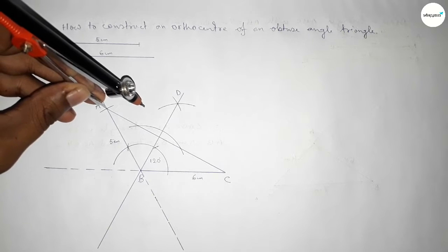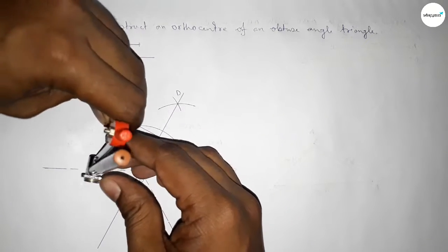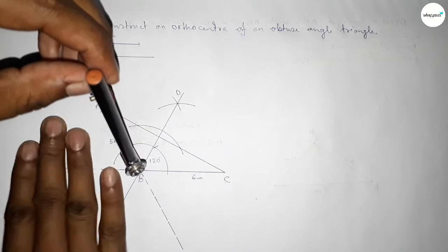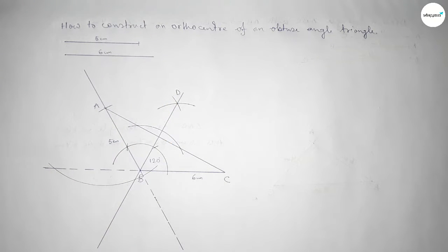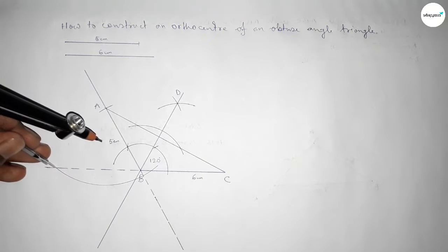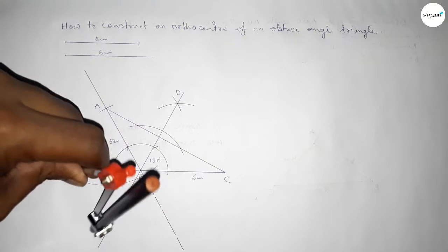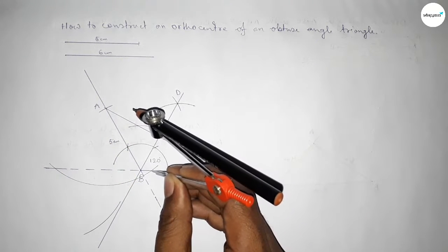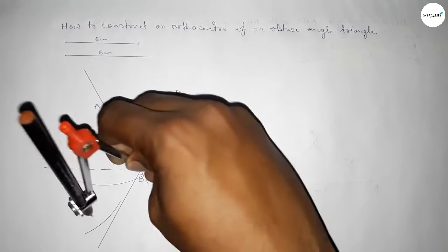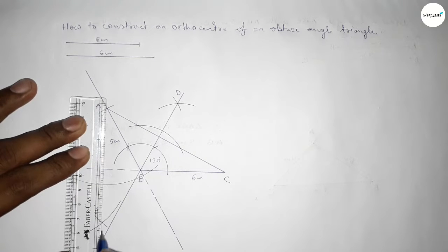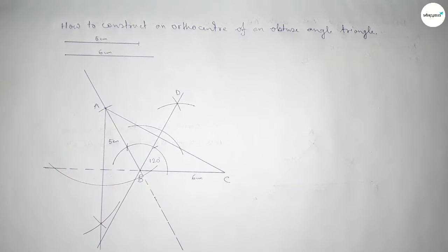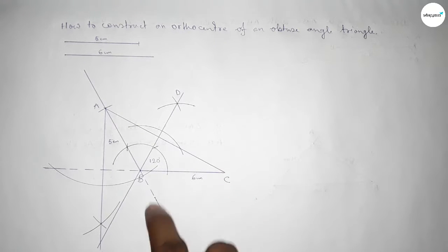Next, drawing a perpendicular line from point A to line BC. Putting the compass on point A and taking any length, drawing an arc. Then taking greater than half and cutting here, and putting the compass on the other side and cutting — both curves intersect at a point. Joining this line.